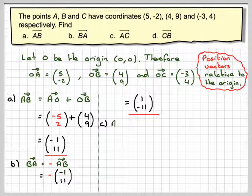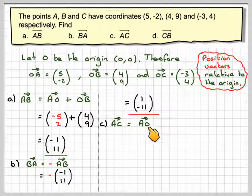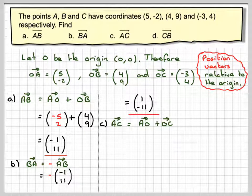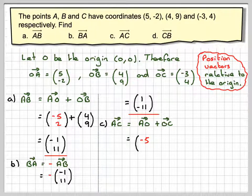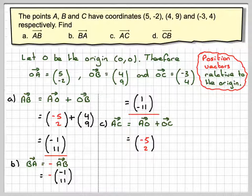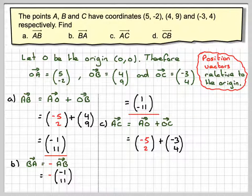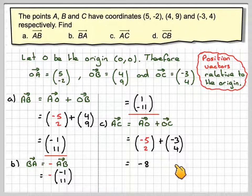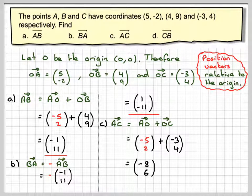Now, I need to find the vector AC, and I can do that by doing A to O plus O to C. Well, I've got the vector OA, so I'm going from A to the origin, and from the origin to C. So the vector AO is going to be in the opposite direction of this one, so it's going to be (-5, 2). And then I'm going to add to it OC, which is (-3, 4). So -5 plus -3 makes -8. And then 2 plus 4 is equal to 6.